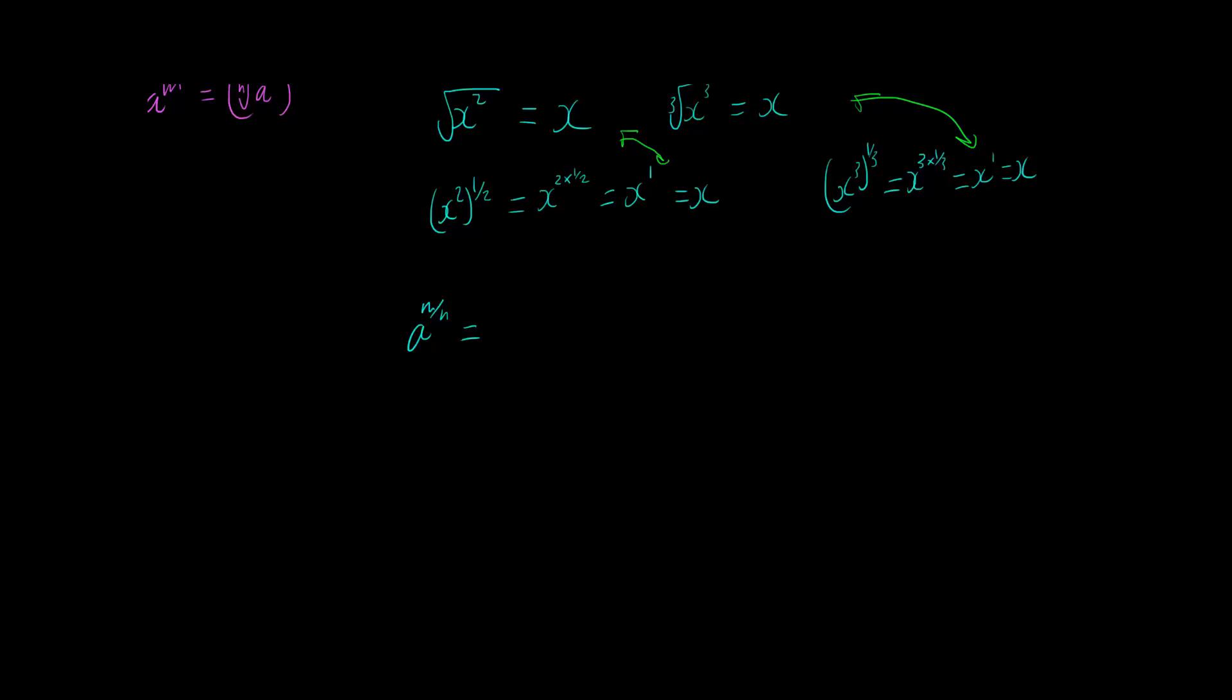So if I have a look at this I can rewrite this again using the third rule that this is a to the m times one over n which is a to the m to the power of one over n.